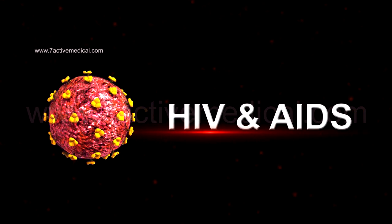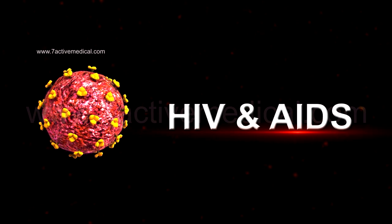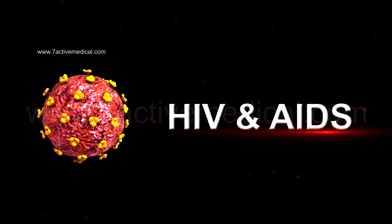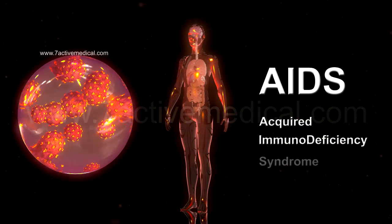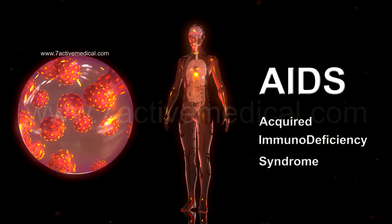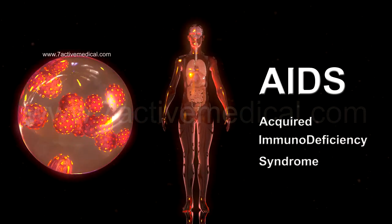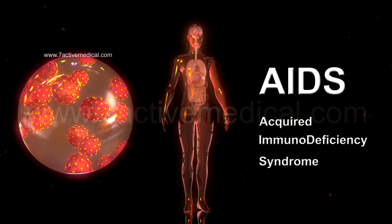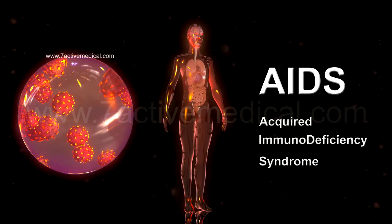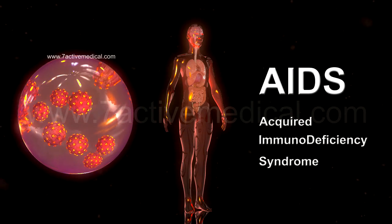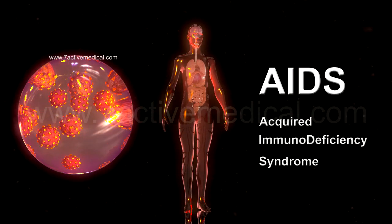HIV and AIDS. AIDS, or Acquired Immune Deficiency Syndrome, is caused by the Human Immunodeficiency Virus, or HIV. AIDS is the final stage of an HIV infection, which targets the immune system of the body, particularly the helper T-cells.